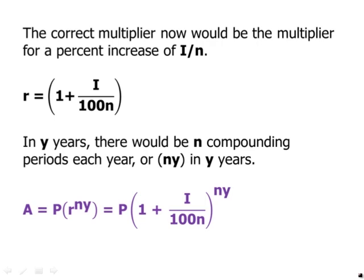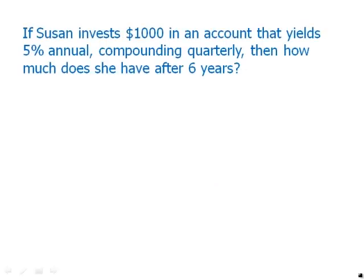Here's another problem. If Susan invests $1,000 in an account that yields 5% annual interest compounding quarterly, how much does she have after 6 years? Again, don't worry about getting an exact dollar amount — just see if you can build the correct formula. Pause the video here and work on this.